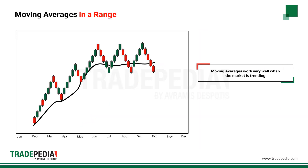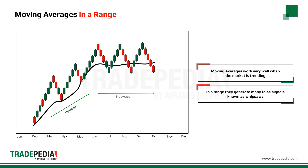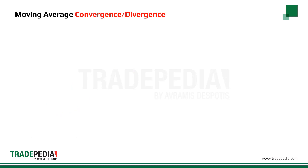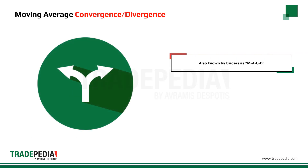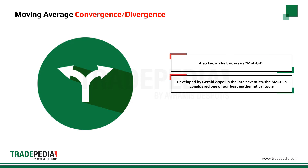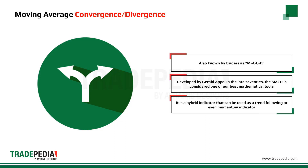Moving averages serve as a very good trend indicator that work very well when the market is trending. In a range, however, refrain from using them due to many false signals known as whipsaws. The Moving Average Convergence Divergence, also known as MACD, was developed by Gerald Appel in the late 70s. It is considered one of the best mathematical tools — a hybrid indicator that can be used as a trend-following or momentum indicator, offering the best of both worlds.